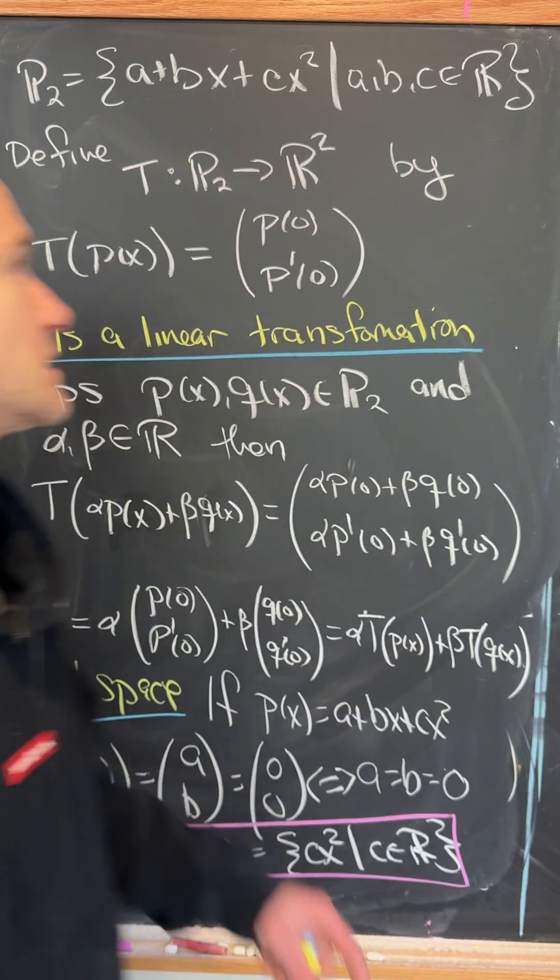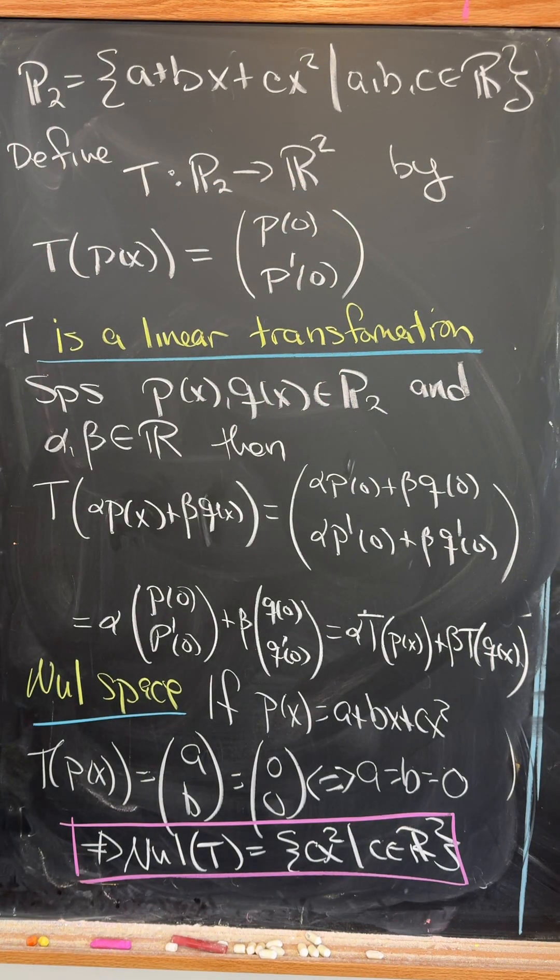Let's do a bit of a linear algebra problem. So let's consider the vector space of polynomials with degree less than or equal to 2 and consider a map